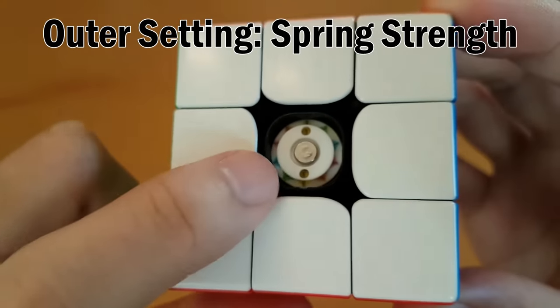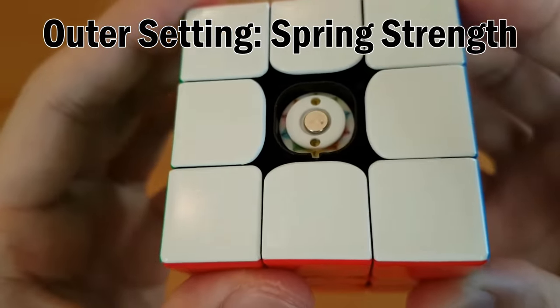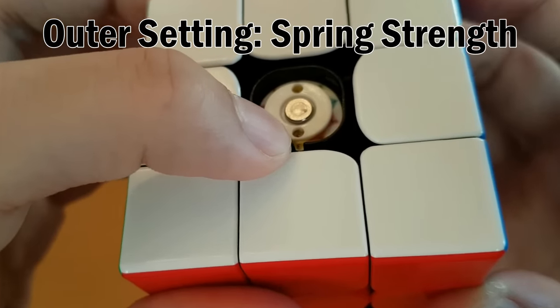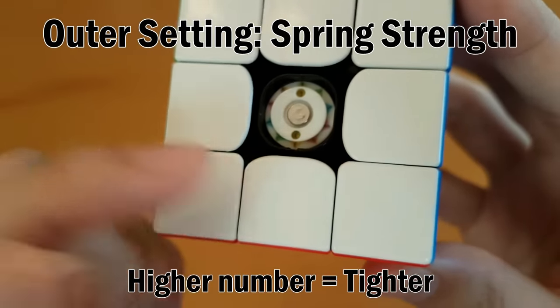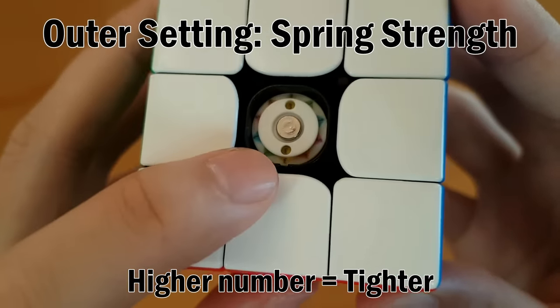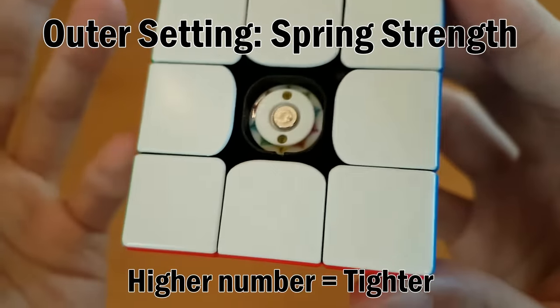The outer settings determine the strength of the springs in the cube, which don't affect how much you can pull them apart, but it does affect how easy it is to pull it apart, which affects the flexibility and how fast the cube will feel.